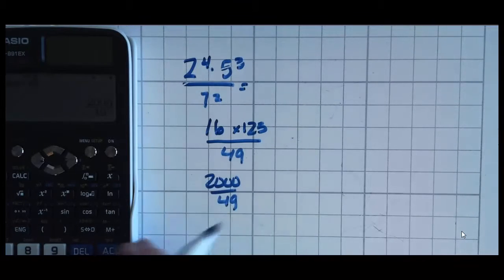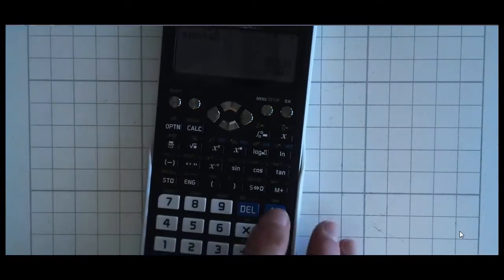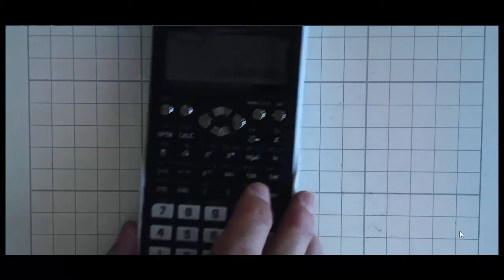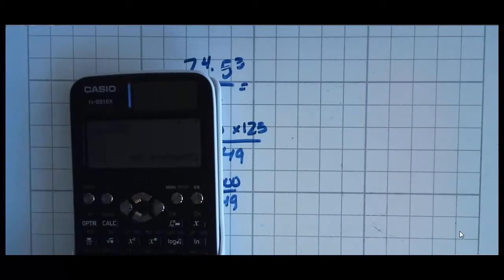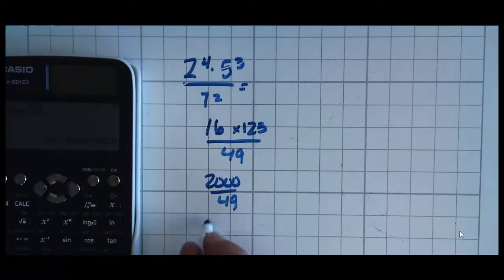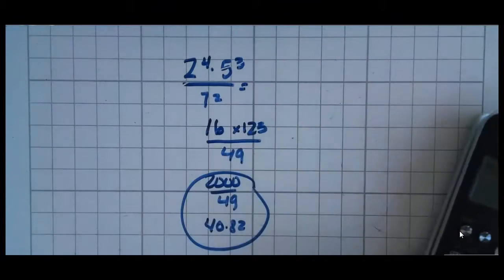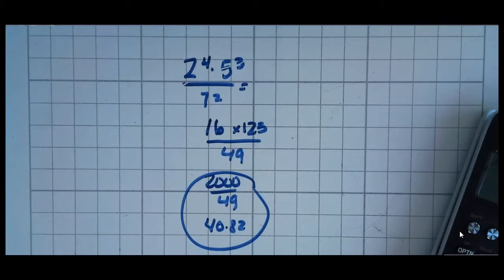Then you take 16 times 125 divided by 49. And your answer is 2,000 over 49. Now, if you want to change that to a decimal, just look for a key on your calculator that either says S arrow D or F arrow D and press it. And that tells you it's 40.82. So there's your answer. And it seems like these are pretty easy and pretty straightforward. And they are.